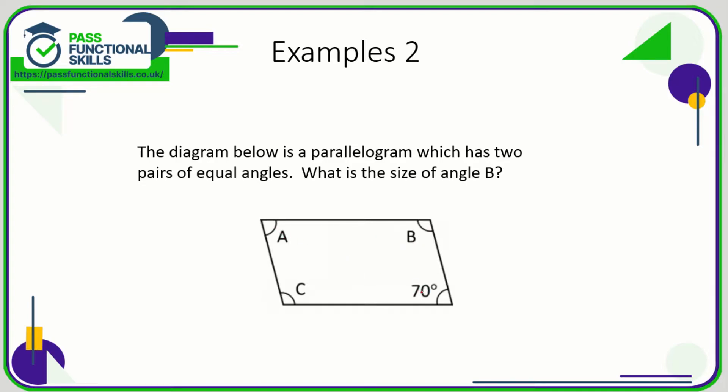So we know that if this angle here is 70 degrees, then A is also 70 degrees. And if you're not sure which angles are the same, just take a look. This angle is clearly less than 90 degrees and this angle is more than 90 degrees. This angle is less, this angle is more, so therefore B and C match and A and the 70 match.